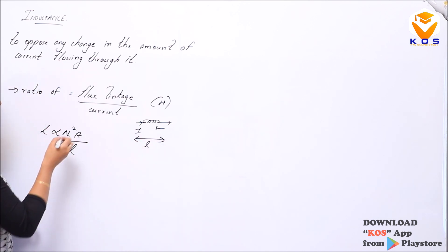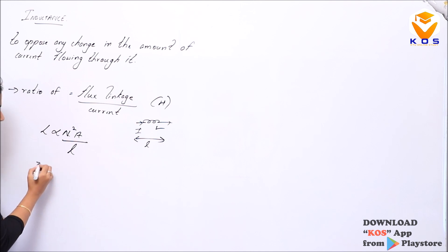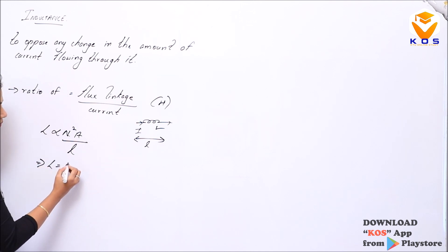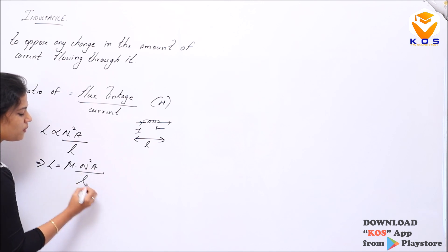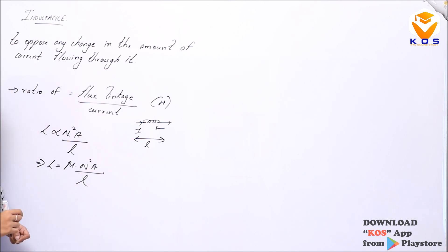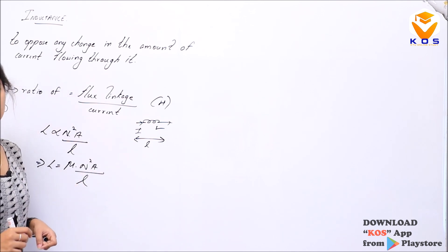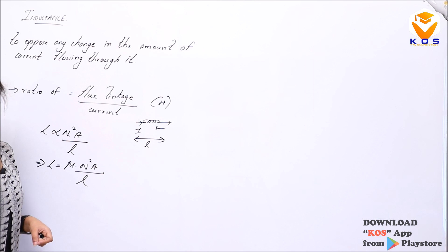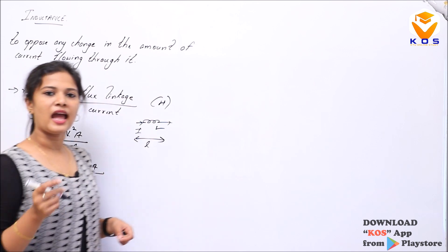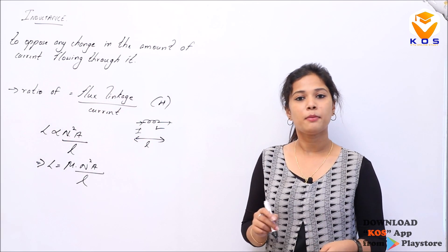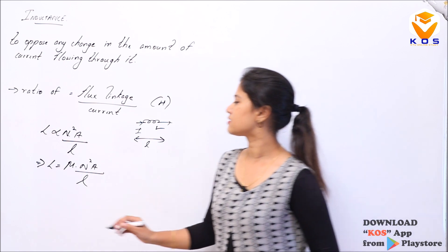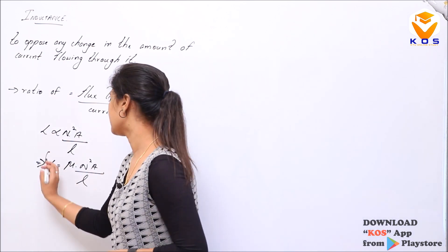L is proportional to area divided by l. Introducing the proportionality constant, L equals mu times n² times A divided by l, where mu is the absolute permeability. This is the equation for inductance, and the unit is Henry (H).